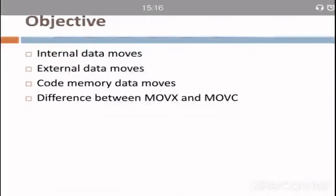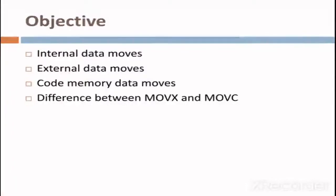These are the objectives. First, Internal Data Moves — that means instructions related to how internal data moves. Second, External Data Moves — that means instructions related to how external data moves between accumulator and RAM address. Third, Code Memory Data Moves — that means data transfer between ROM and accumulator. At last, difference between MOVX and MOVC instruction.